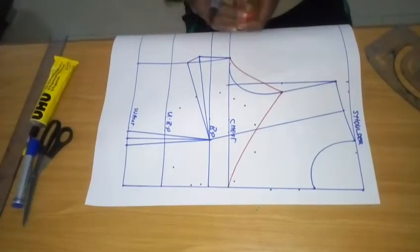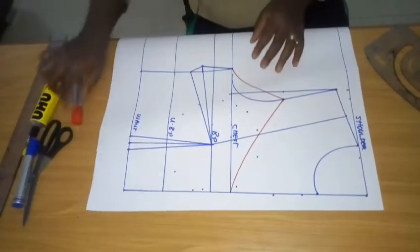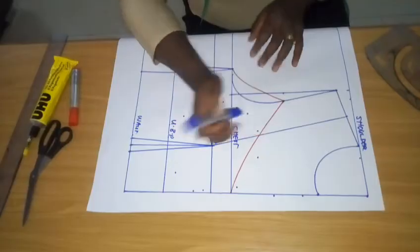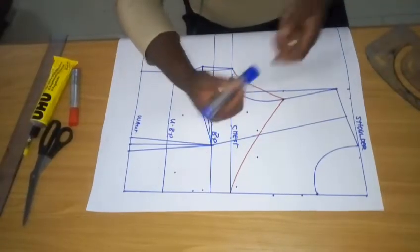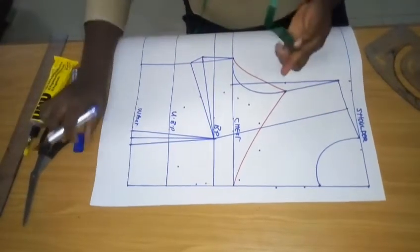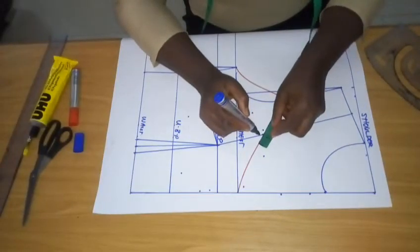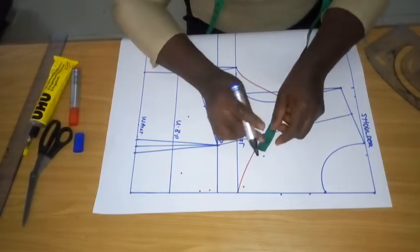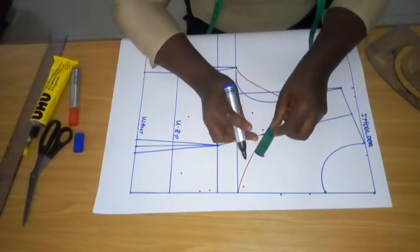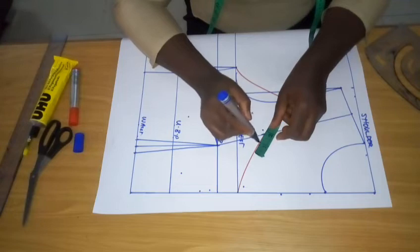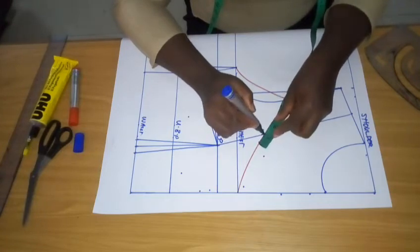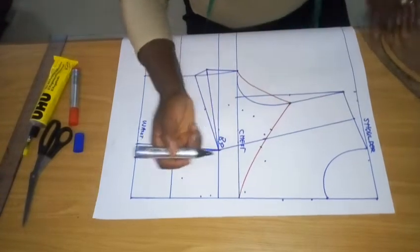So right now we want to contour what we have on the upper bust. To contour what we have on the upper bust, simply from this line that crosses the neckline, you go in by 0.75. I'm trying to get my 0.75 accurately. And this is my 0.75.